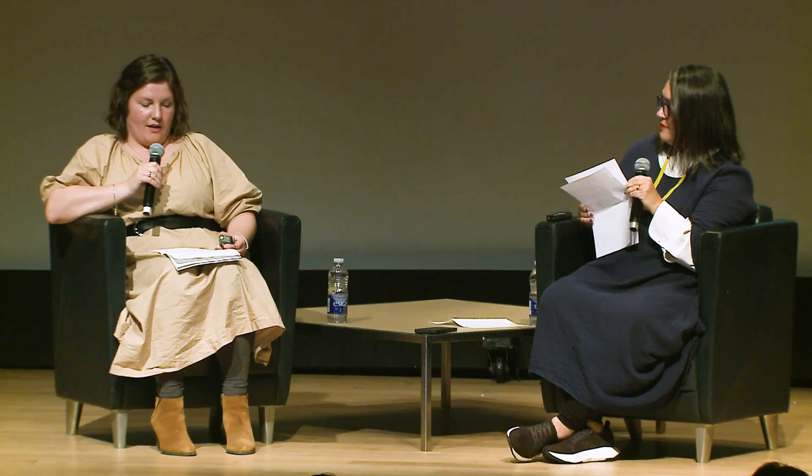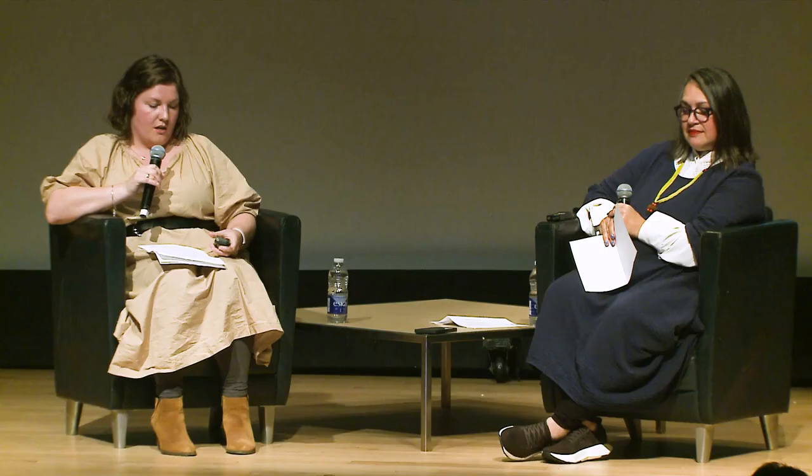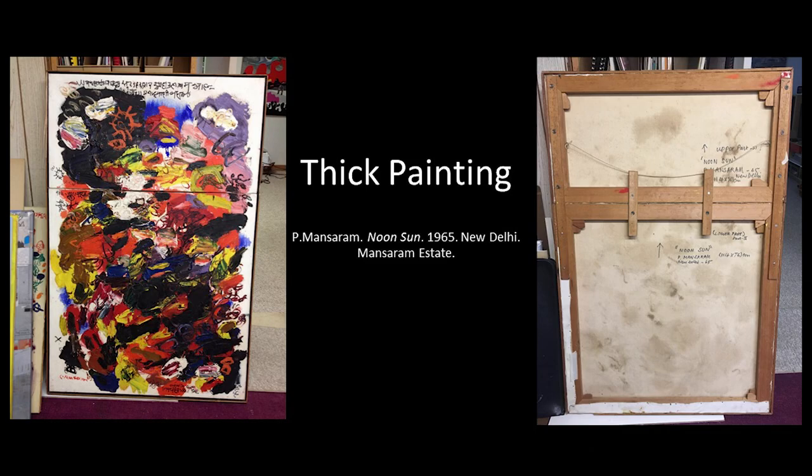Mansaram experimented with many forms and techniques to create art, and the overarching connection between all of them was collage. I'm going to go through a quick overview of the kinds of works you can see in the collection. Thick painting — paint that builds up on the canvas — was one of the earliest collage forms, where he collaged paint colors, drawings, words, and images cut out of paper formats. This one, Noon Sun, is interesting because it was initially just the bottom canvas and was framed, but Mansaram decided it was incomplete and later had a smaller canvas added so he could finish and build on it like a final chapter of a book.